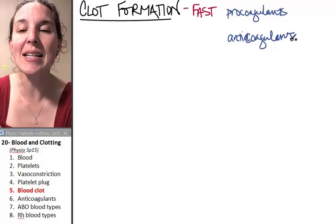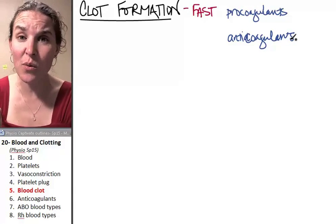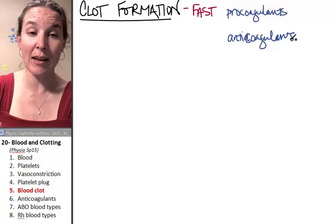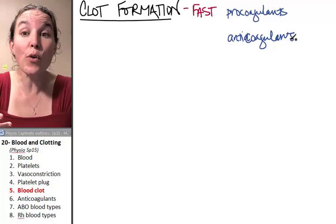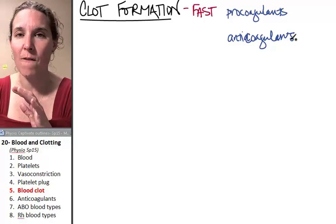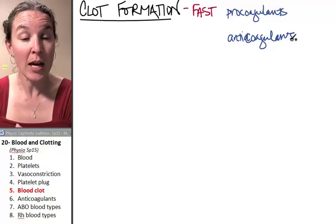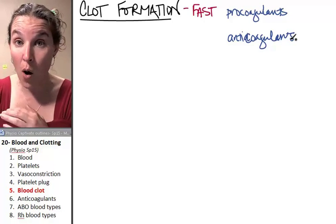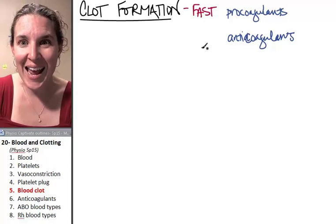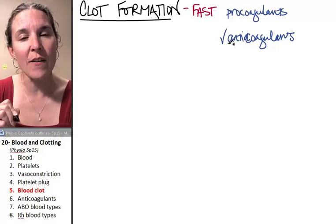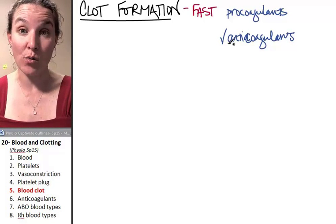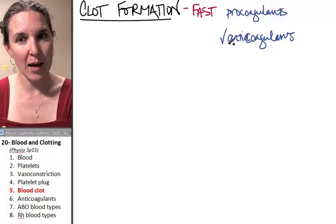And the anti-coagulants are saying, dude, we do not need to clot. Now, who's winning in undamaged tissue? Both of them are present. There are proteins that are found in the blood plasma. Both of them are present in the blood at all times. But anti-coagulants are present in a greater amount if there is no clotting that has happened.